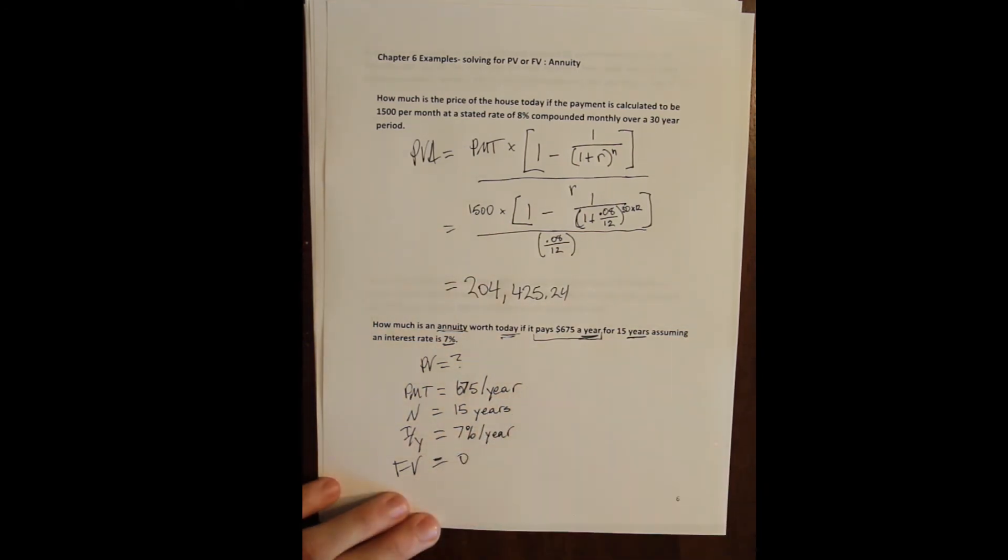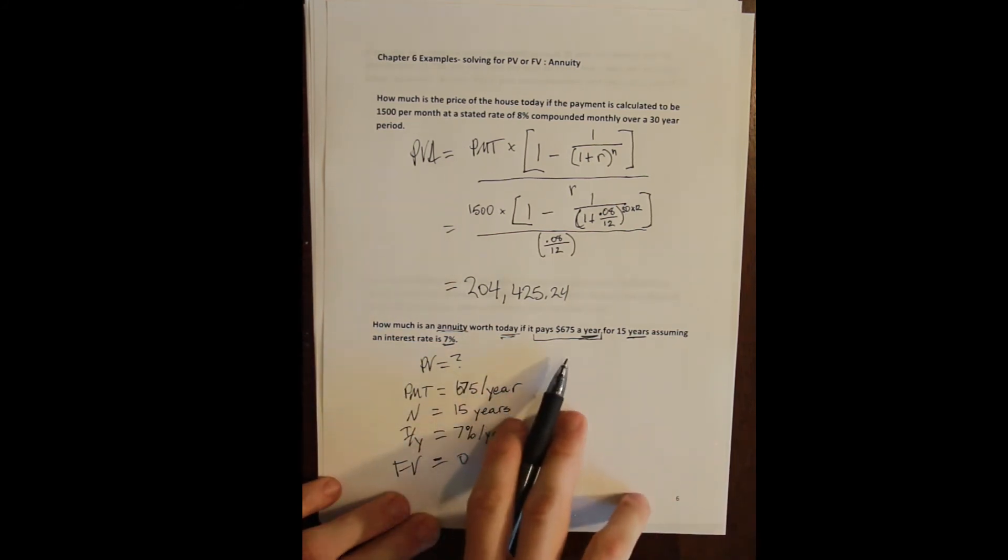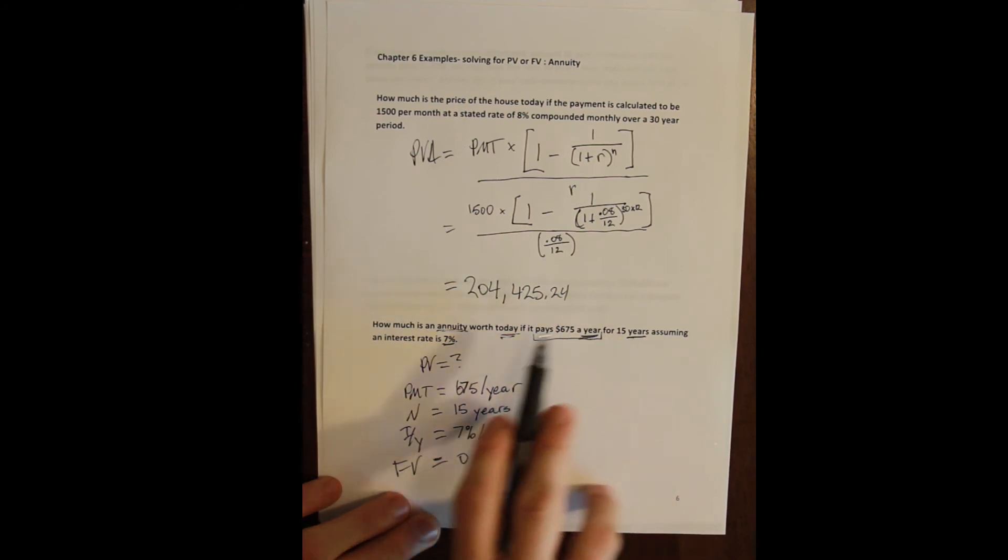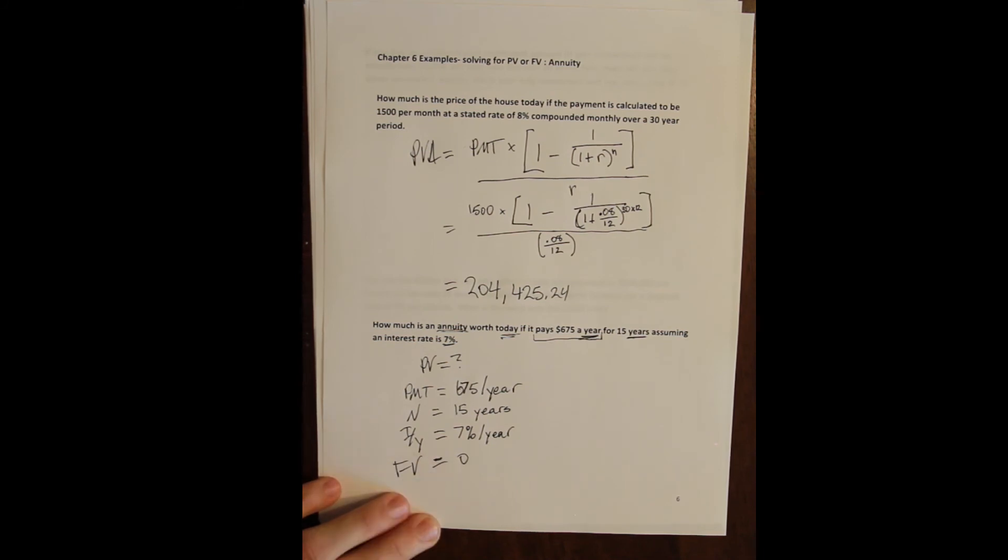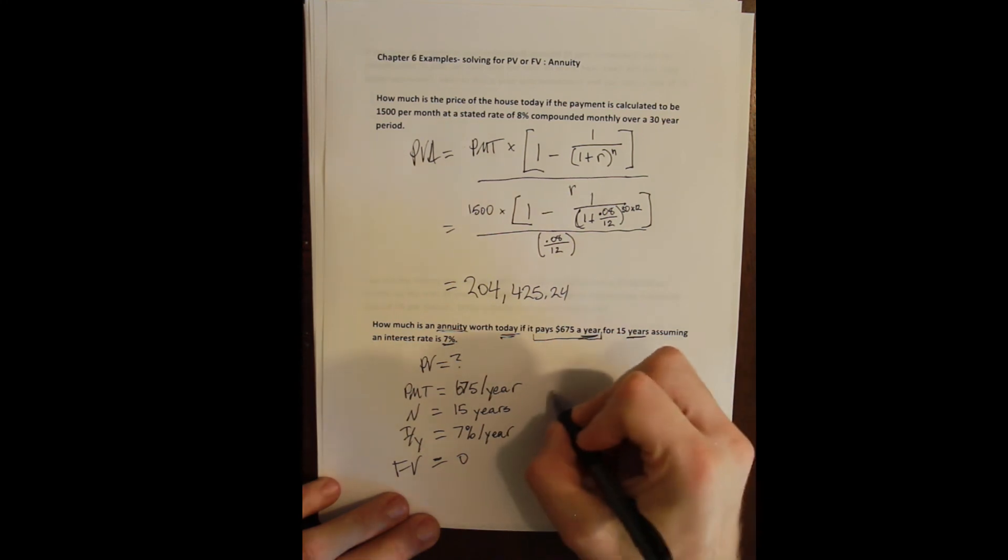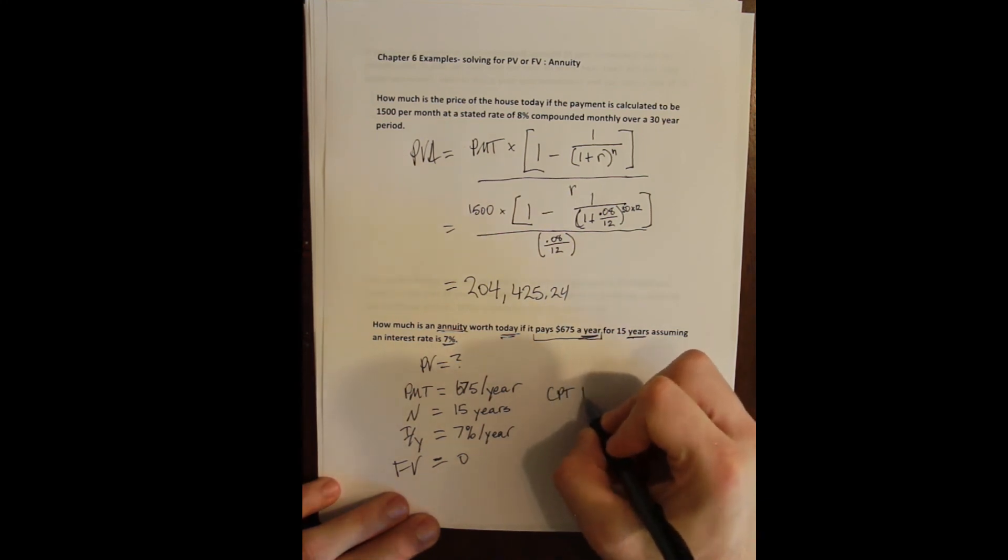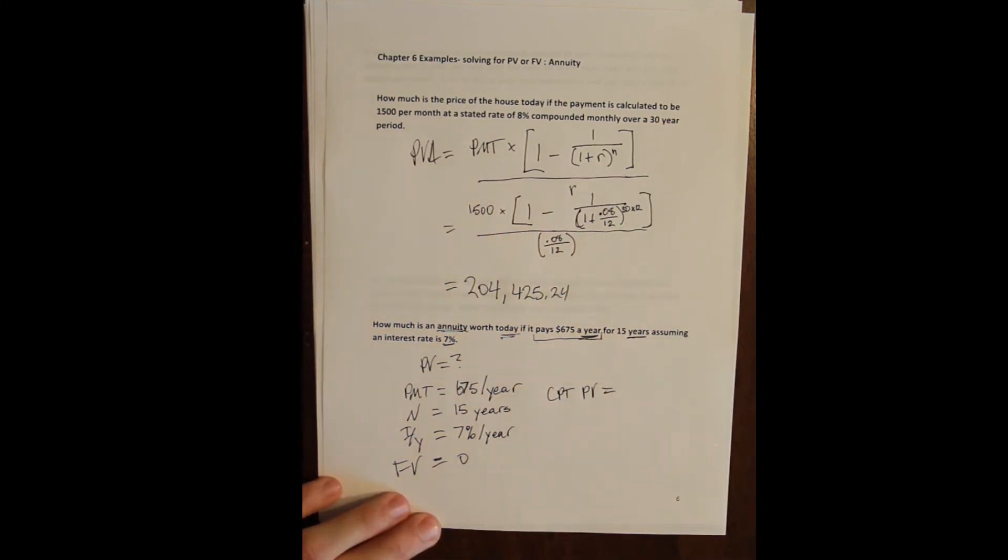There's no future value because there's no lump sum that we might get at the end. Of course, we could incorporate that. This problem could say $675 a year for 15 years, and then at the end of the 15-year period, you also get $1,000. Then we'd have a future value. But we don't, so that's zero.